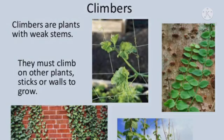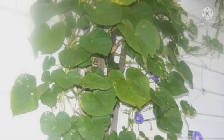Another type of plant is known as climbers. Climbers are small plants with weak stems. They must climb on other plants, sticks or walls to grow. They need support to grow and cannot stand on their own. You can see in the picture an example of a climber plant.